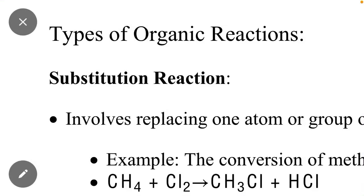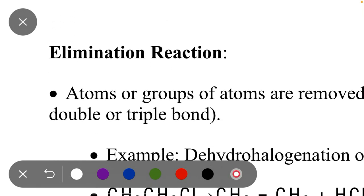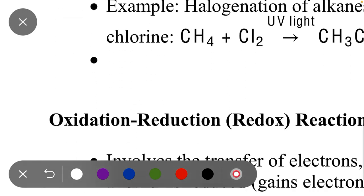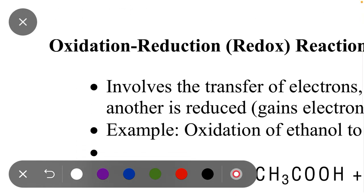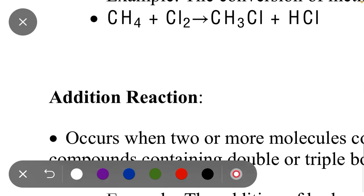Welcome to Chemistry Academy. In this video we will study the types of organic reactions. There are five types: substitution reaction, addition reaction, elimination reaction, radical reaction, and oxidation-reduction reaction, which is also called redox reaction. We will study all these reactions in one video.